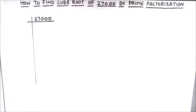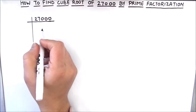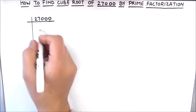Hello everyone. In this video we are going to learn how to find the cube root of 27000 by using the prime factorization method. In this method we divide the number by prime numbers, find the factors of that number, and write the number as the product of its prime factors to find the cube root. So let's start dividing this number by prime numbers.